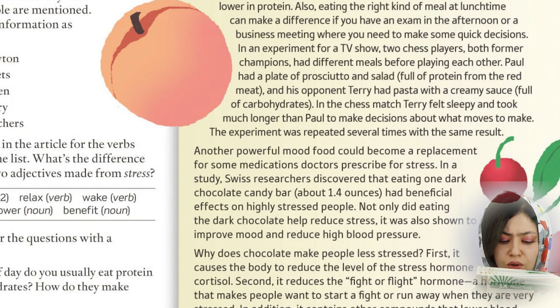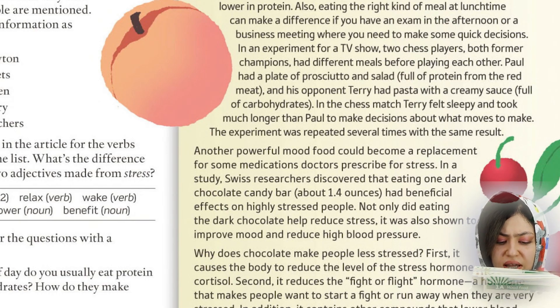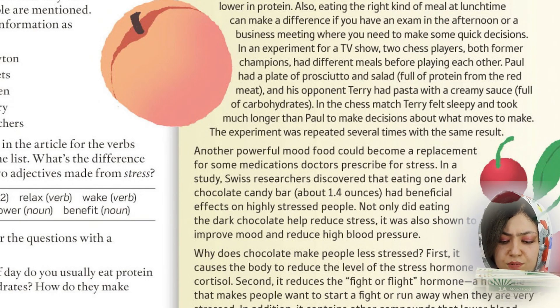On the other hand, food rich in protein makes us feel awake and focused. Research has shown that school children who eat a high-protein breakfast often do better at school. Also, eating the right kind of meal at lunch can make a difference if you have an exam or a business meeting in the afternoon. In an experiment for a TV show, two chess players — both former champions — had different meals before playing each other. Paul had prosciutto and salad, full of protein, and his opponent Terry had pasta with a creamy sauce, full of carbohydrates. Terry felt sleepy and took much longer to make decisions. The experiment was repeated several times with the same result.